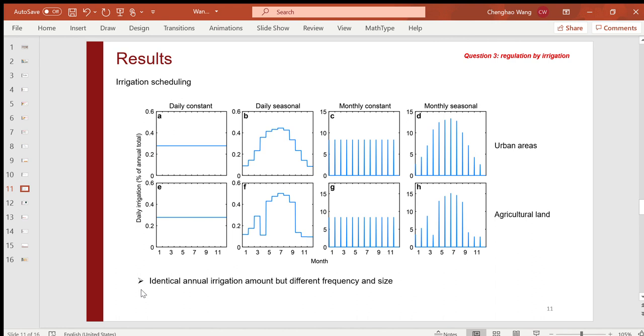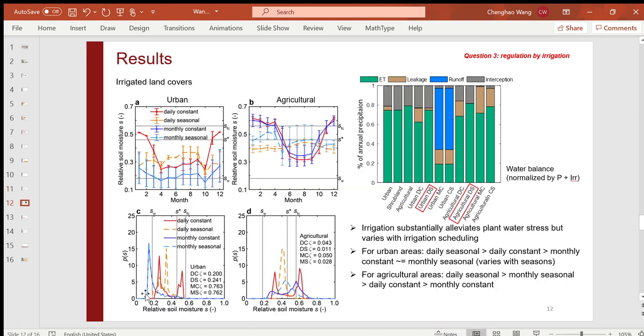Based on the observed ET data, precipitation, and interception from literature, I designed four irrigation schedules for urban and agricultural areas: daily constant, daily seasonal, monthly constant, and monthly seasonal. They basically have identical annual irrigation amount, but differing in frequency and size.